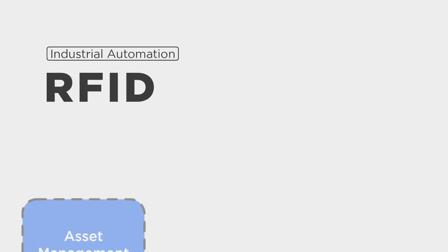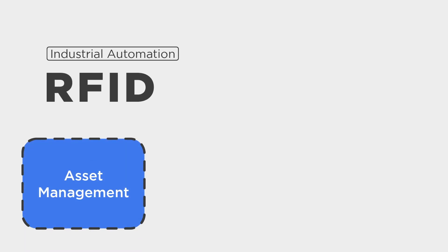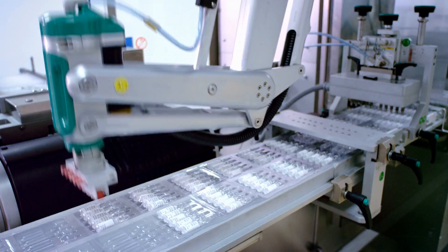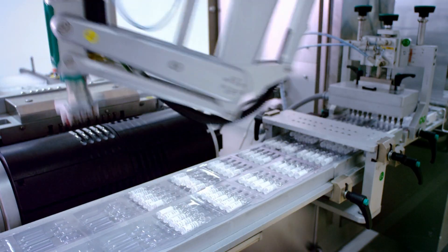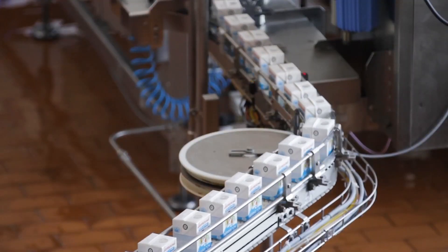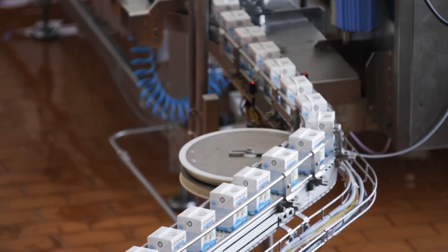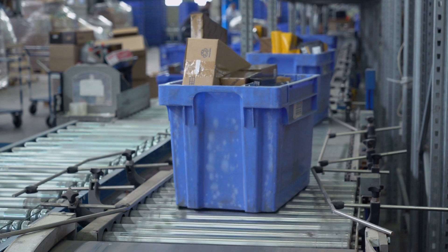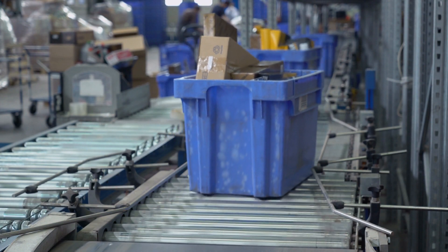Breaking it down, we put RFID into three buckets where we see most customers using it. Starting with the first bucket, we have asset management. This is going to be for people trying to ensure they have the right tool or mold installed before running a specific process, or even keeping inventory of those assets in cribs and warehouses to help track them down.